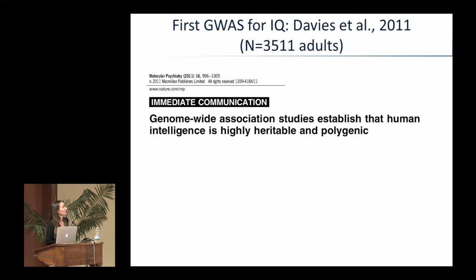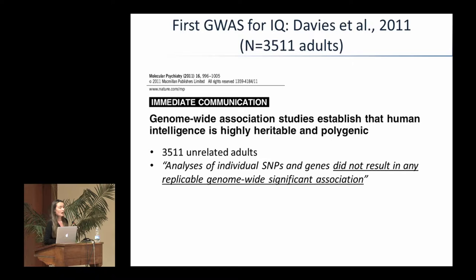The first GWAS for IQ was conducted in the lab of Ian Deary with more than 3,000 individuals, a relatively large study at the time. Their basic conclusion was that IQ was highly heritable and highly polygenic. However, they didn't find any significant genetic variant associated with IQ. This was really disappointing, because IQ has around 80% heritability in adulthood. Not a single SNP popped out as statistically significant, even with a sample size of more than 3,000 individuals.